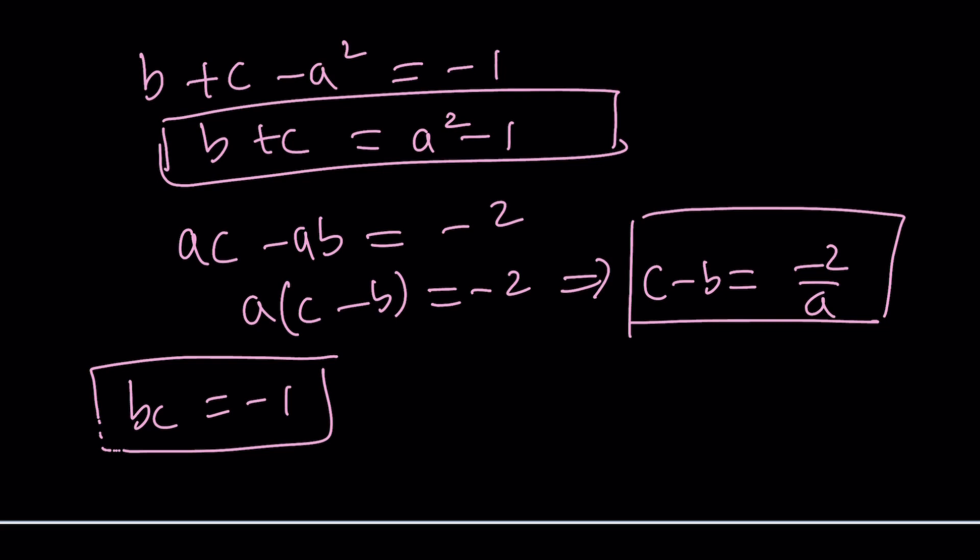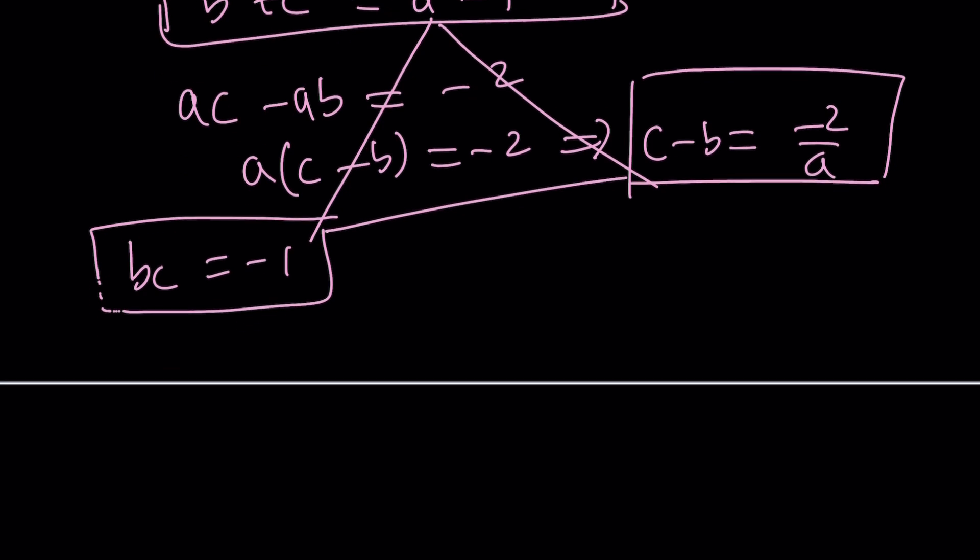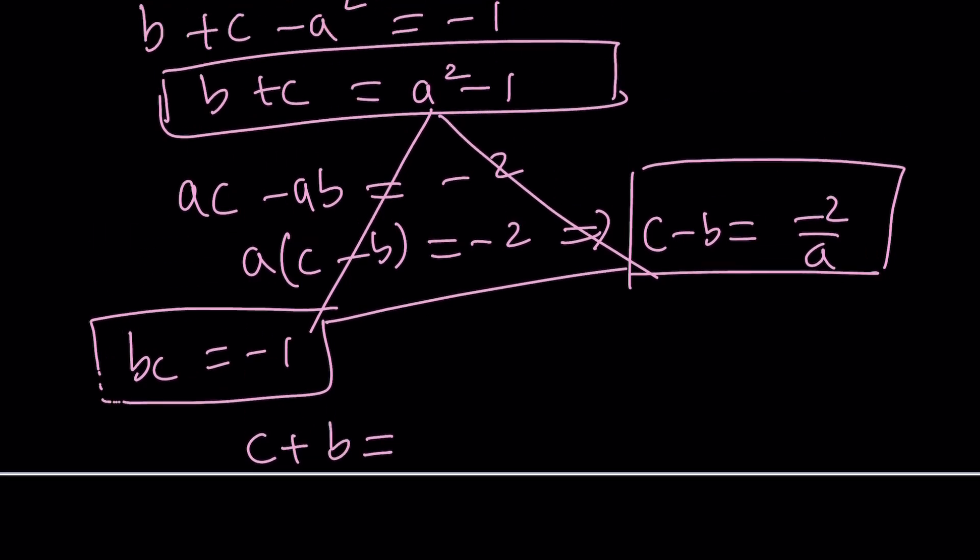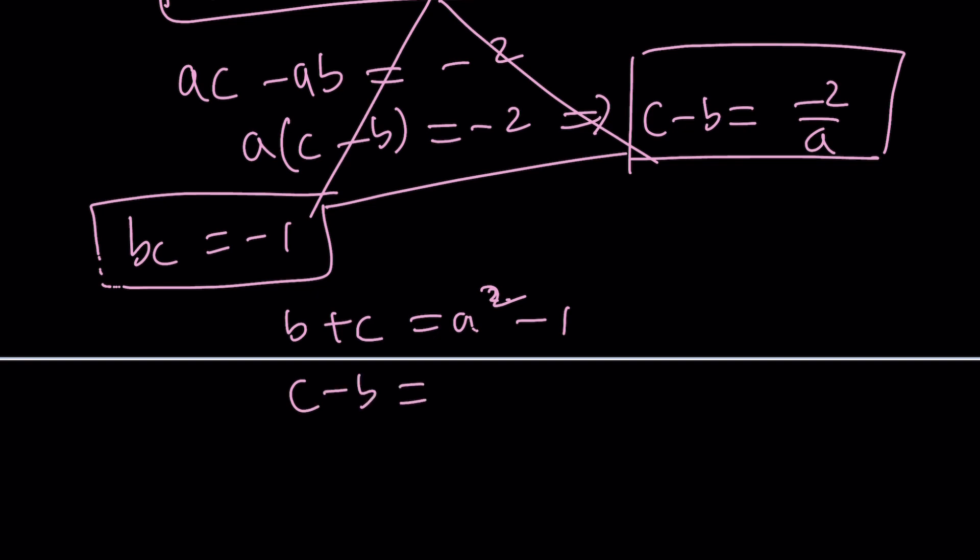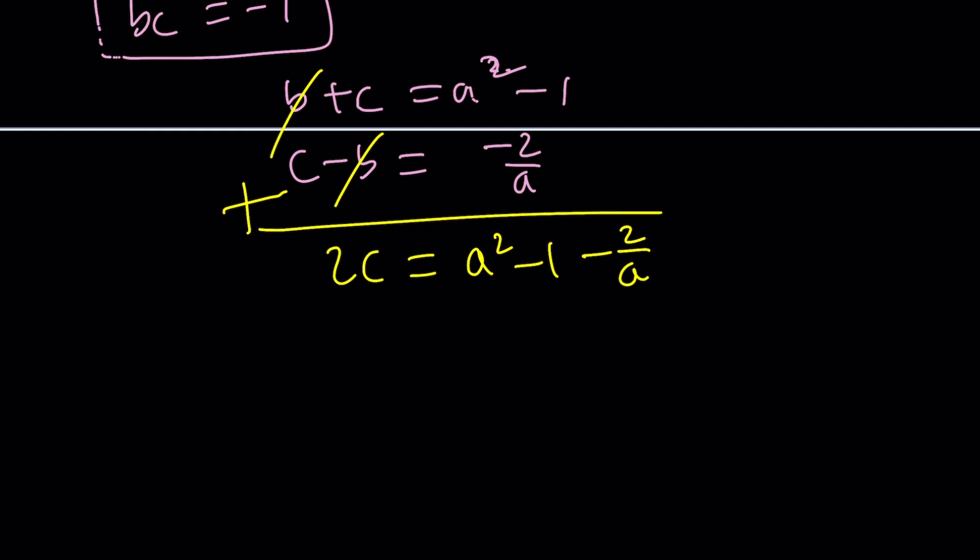Finally, we have bc equals negative 1. How do you put these three equations together? I'll write this as c plus b. I can just keep it as is. b plus c is a squared minus 1, and then c minus b is negative 2 over a. We're going to add these two equations, and then b is going to cancel out. We're going to get 2c. When we add them, we're going to get something like a squared minus 1 minus 2 over a. This can be simplified. You can write it as a cubed minus a minus 2 over a. Multiply both sides by one half and you're going to get the c value from here.